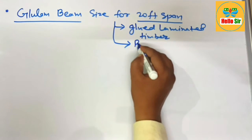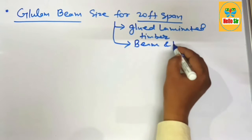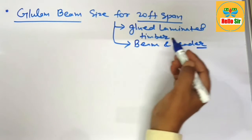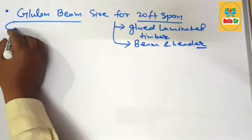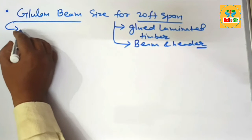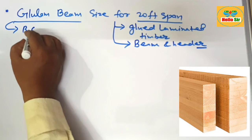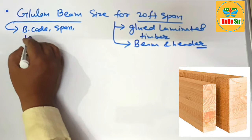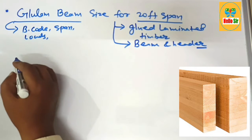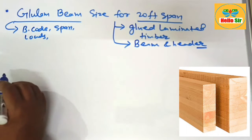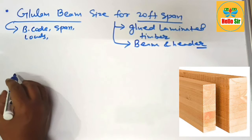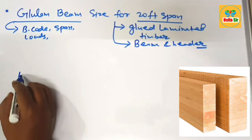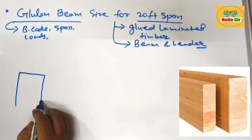It is used as a beam and header in building construction. The size of the beam depends on many factors like building code, the span length of the beam, the load condition, and specific requirements. First we make a rough diagram to understand about the different dimensions of this beam.